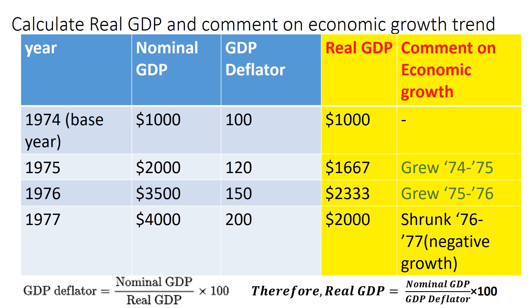For 1975: the base year's real GDP was 1000, and the next year's real GDP was 1667. That means the economy grew from 1974 through 1975.